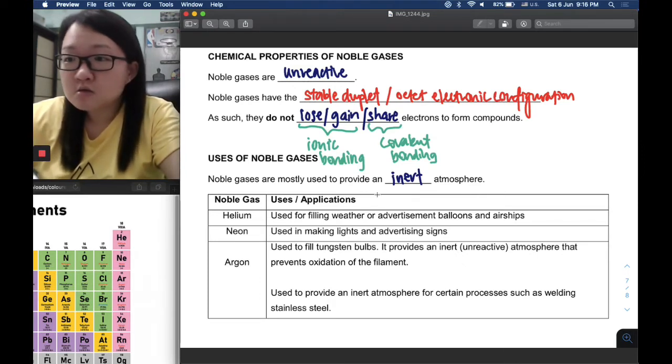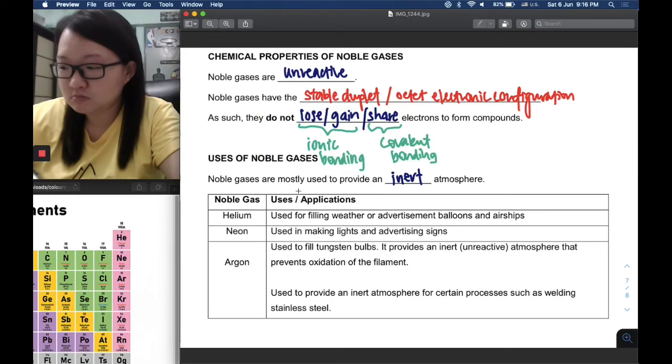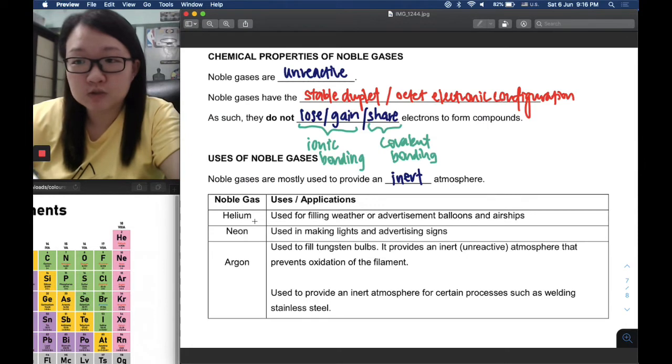Noble gases are highly sought after and have good uses. You need to remember some common uses. First, helium is used for filling weather or advertisement balloons as well as airships because it's very light. It has a very low relative atomic mass, so it's good for those purposes.